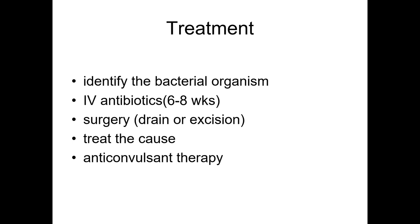Treatment of brain abscess: first you should identify the bacterial organism. This is an important point because if you detect the organism you can choose the suitable antibiotics. Usually this is done by culture and sensitivity test. IV antibiotics may be needed for about two months. Surgery is important in brain abscess — usually we have two types: drainage and excision. You should also treat the cause. For example, if the patient has congenital cyanotic heart disease, you should treat the risk factor. You may also need anti-convulsant therapy.